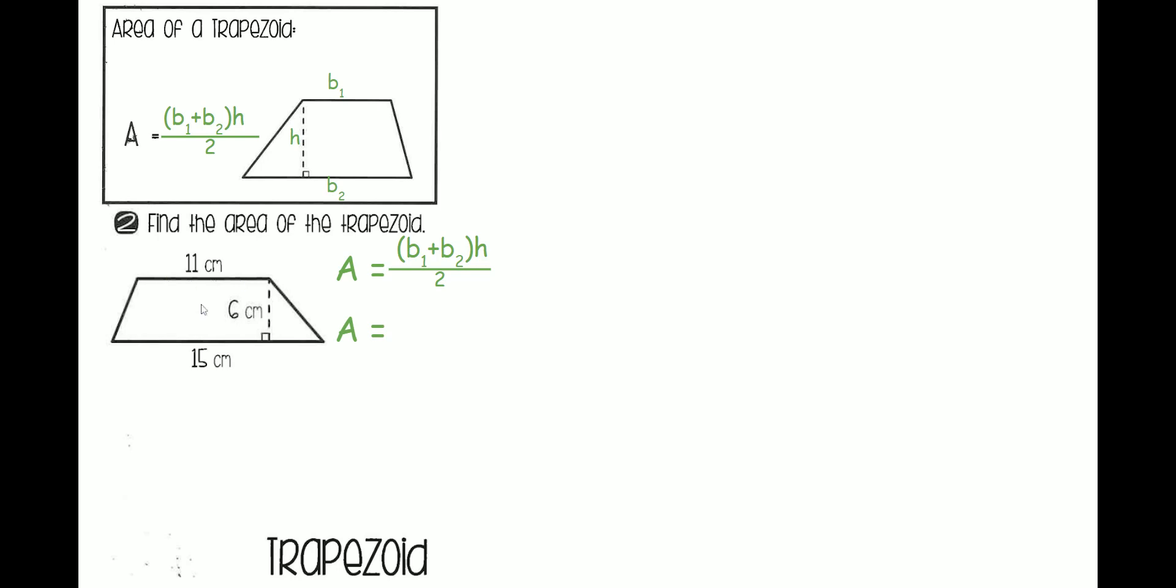Base 1 is 11. Base 2 is 15. So we should have, in the parentheses, 11 plus 15. Now, outside that parentheses, we're multiplying with the height, which is 6 centimeters. So in place of h, we're writing 6. And we're dividing everything by 2.